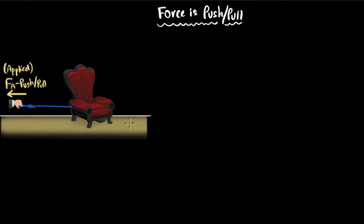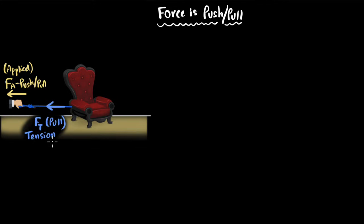But besides that, what other forces can we think of? Although you are the one who's pulling on the rope, who's pulling on the chair? It's the rope that is pulling on the chair. And this force that ropes and strings put is what we call a tension force, which we represent as FT. A tension force will always be a pulling force and will always be along a rope or a string. It's called tension force because this force exists because the rope is tensed — the more the rope is tensed, the greater the tension force.